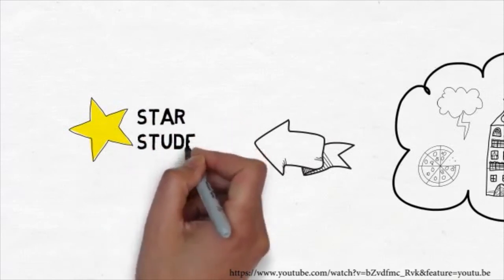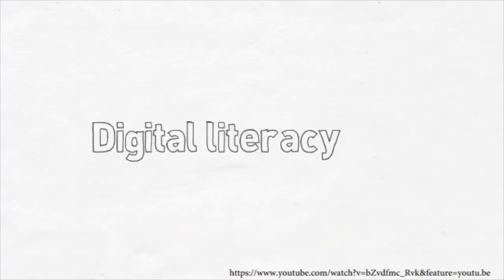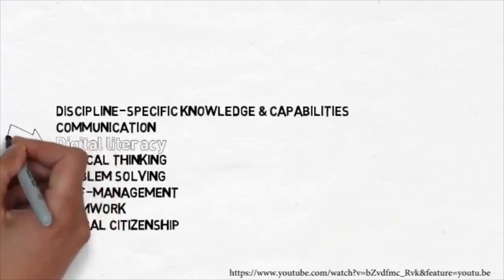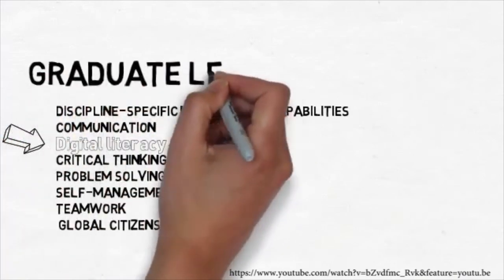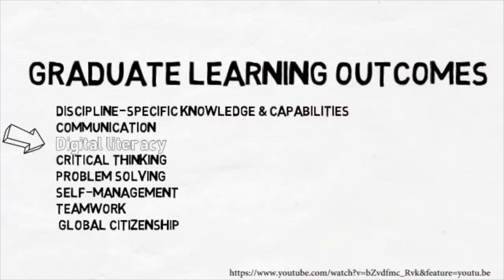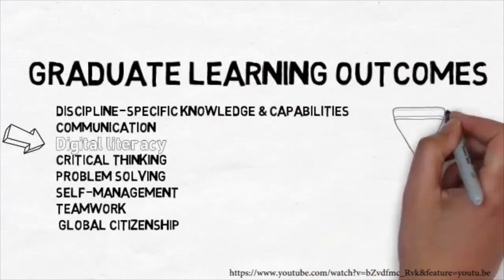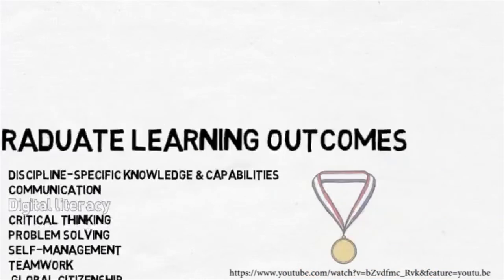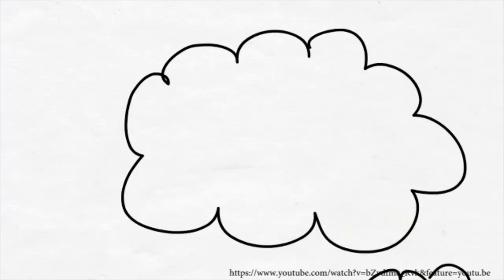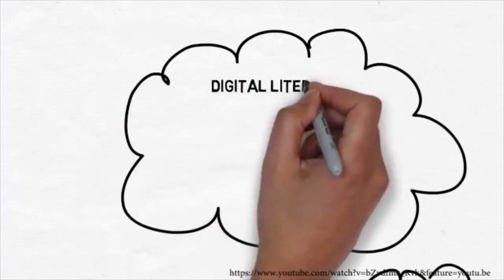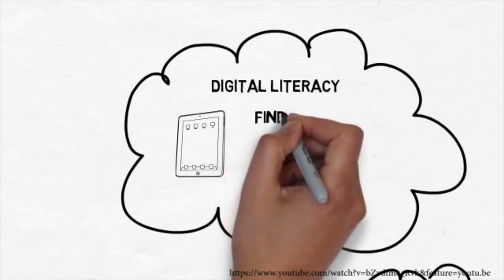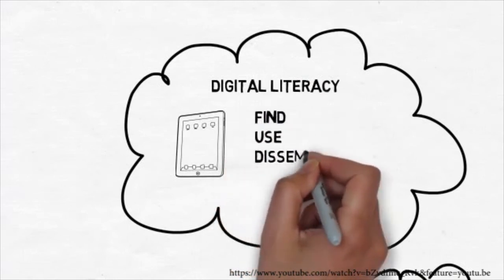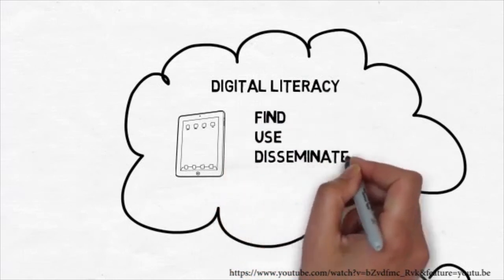Digital literacy is one of eight Deakin graduate learning outcomes — a core set of skills you'll get as a Deakin graduate. Digital literacy is all about using technologies to find, use, and disseminate or share all kinds of information.